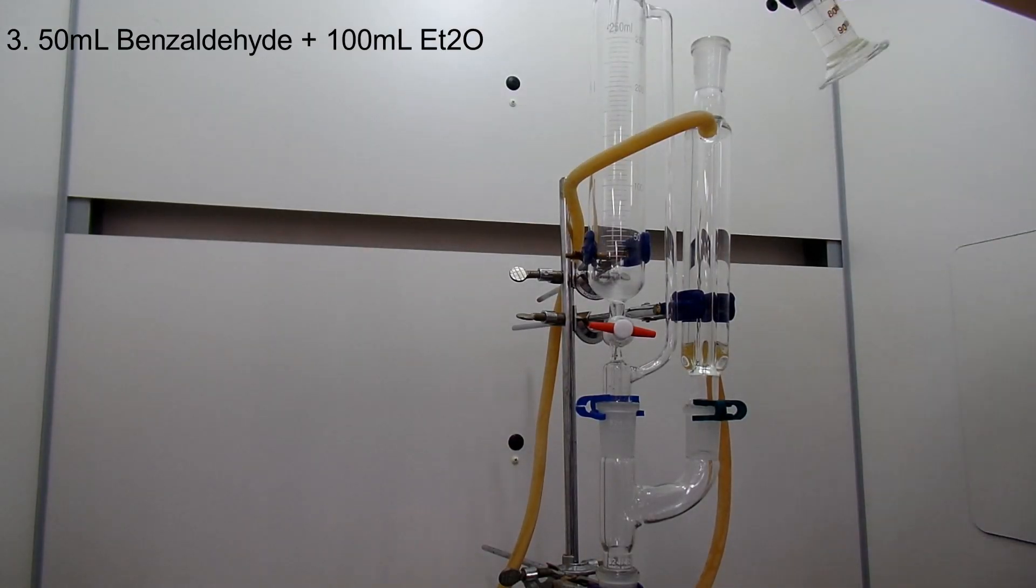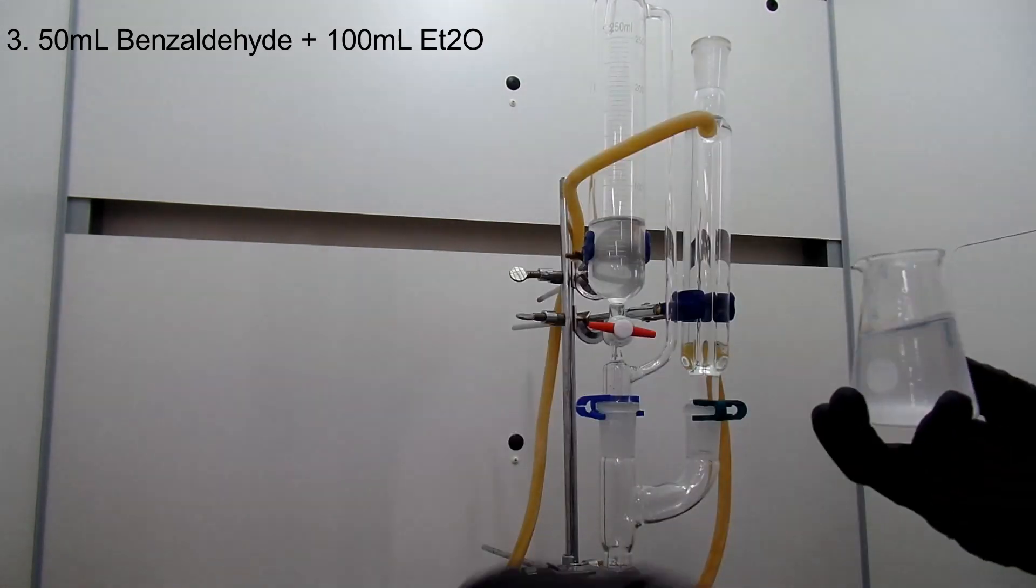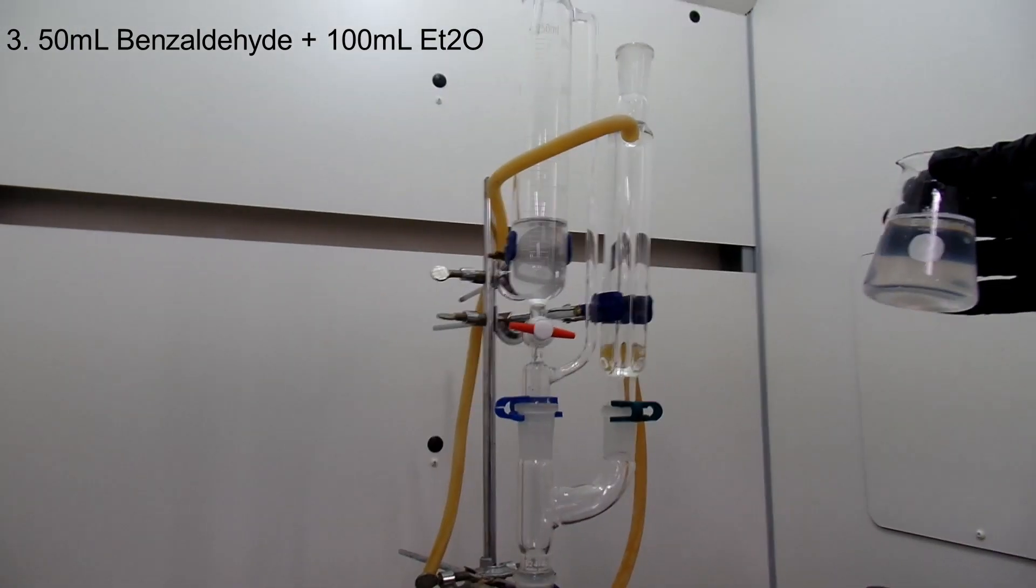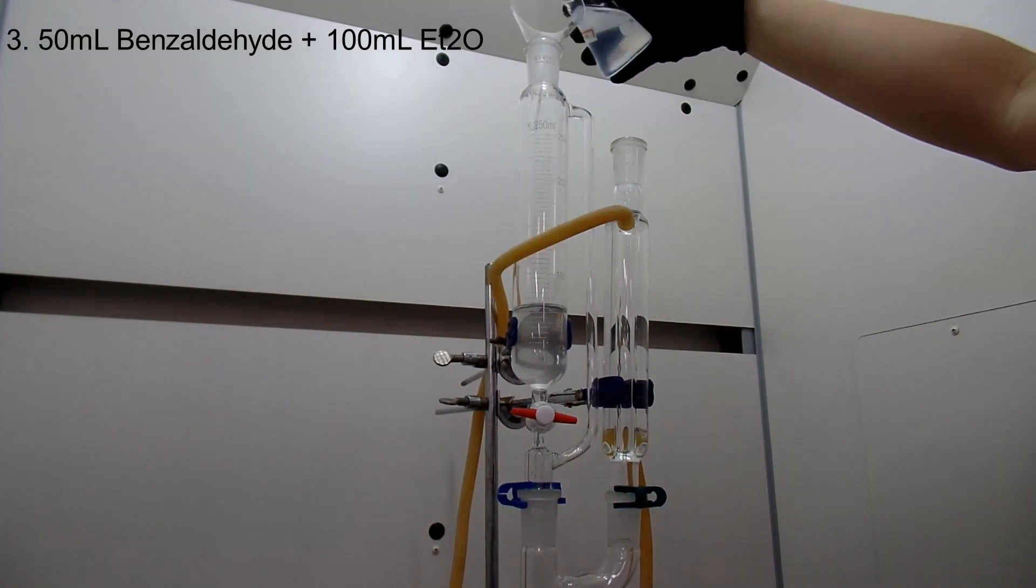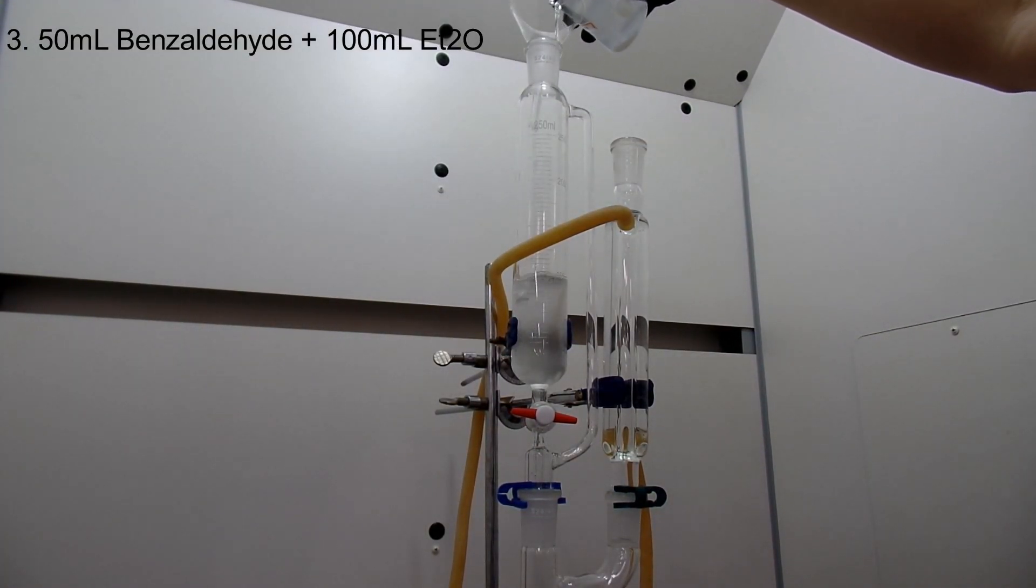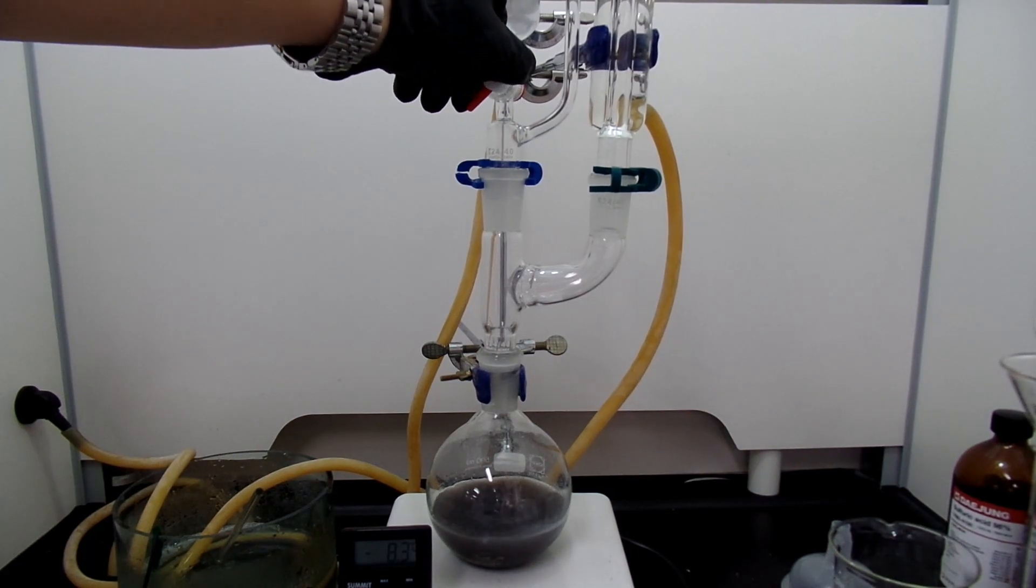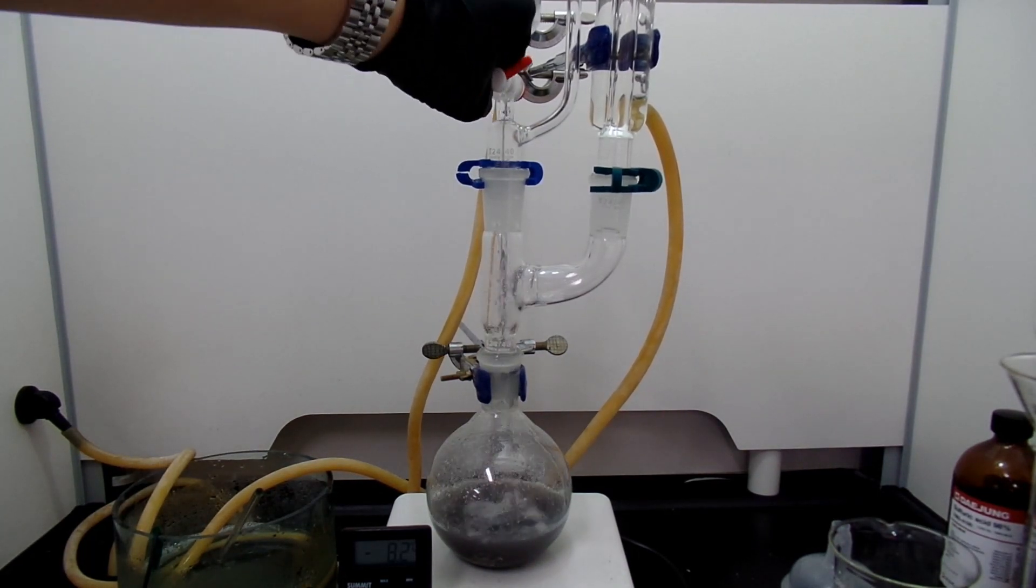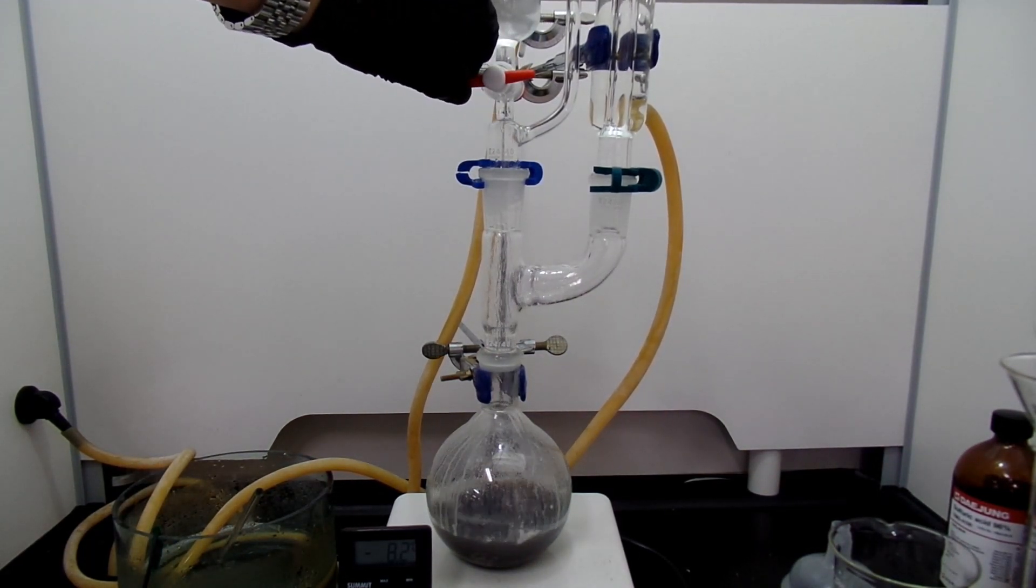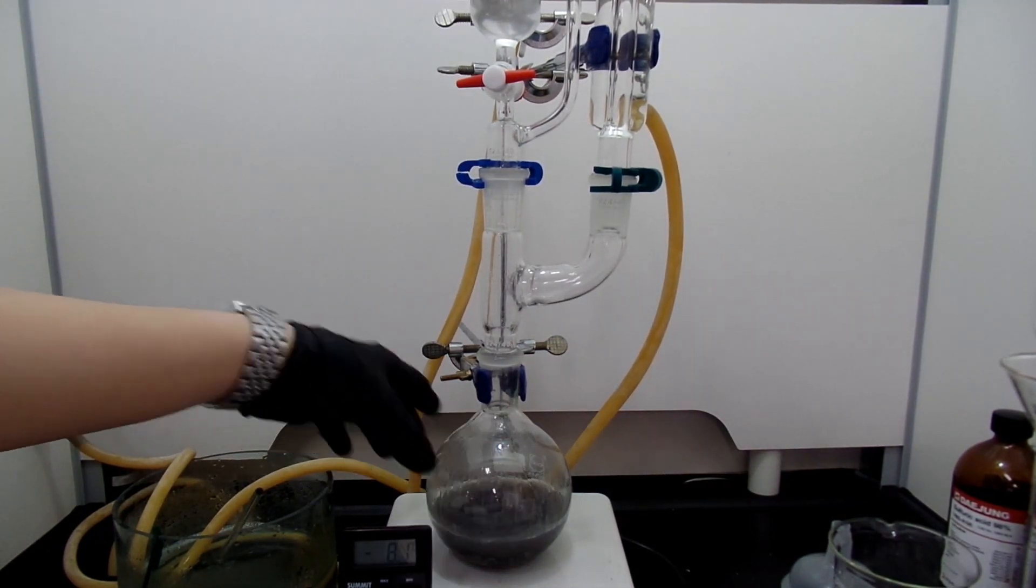When everything is added, I pour 50ml of benzaldehyde and 100ml of diethyl ether into the addition funnel. Add benzaldehyde and diethyl ether mixture dropwise. Here, with only small amounts, the reaction is pretty vigorous. After all the addition, mix it for additional 15 minutes.